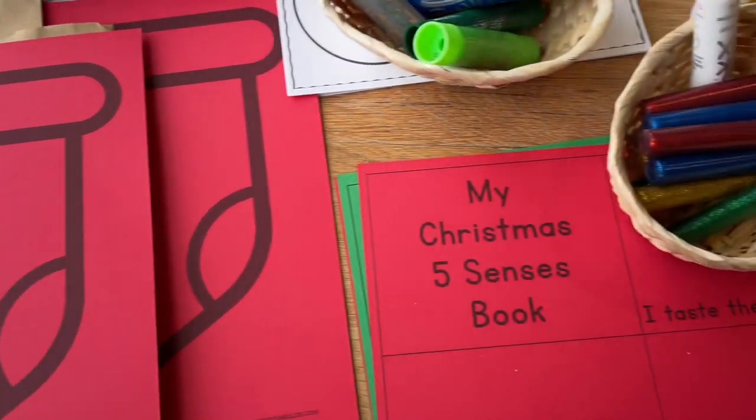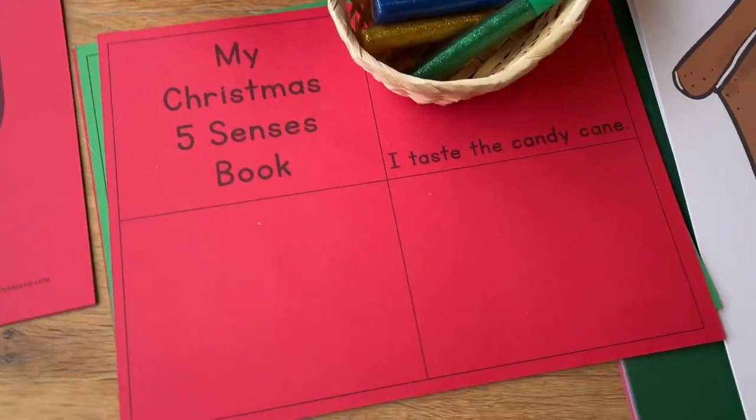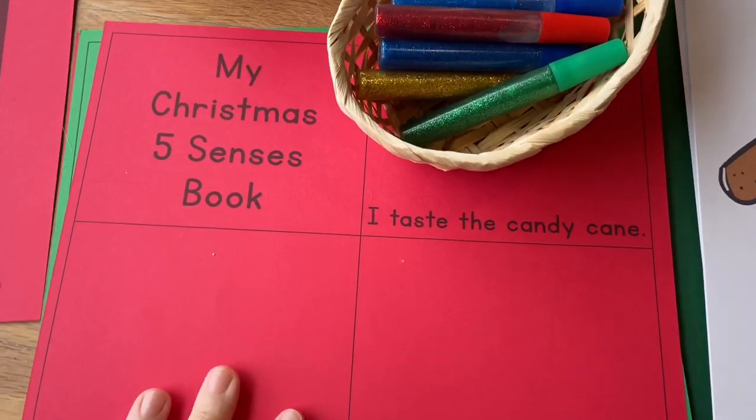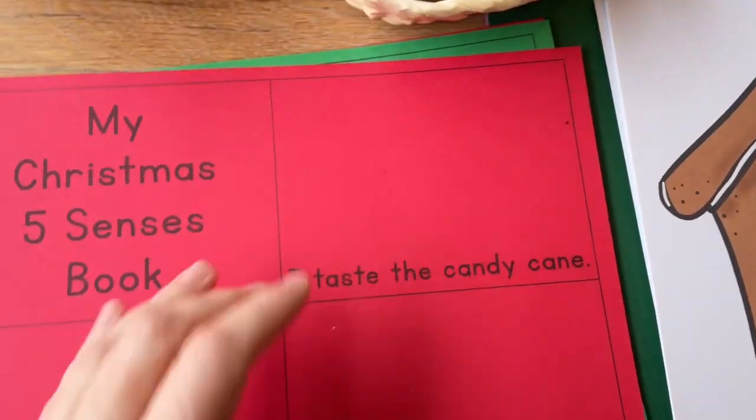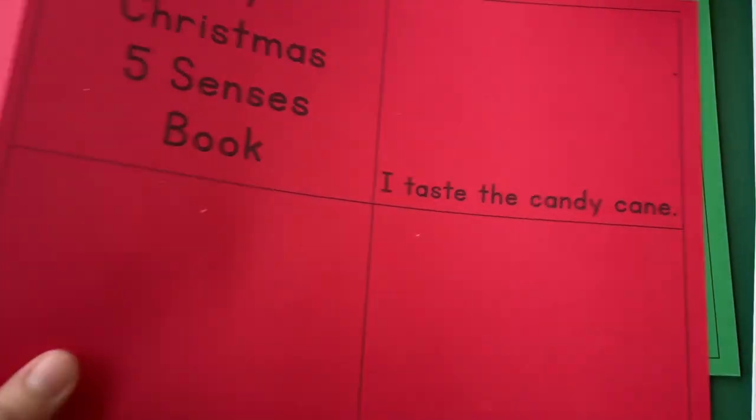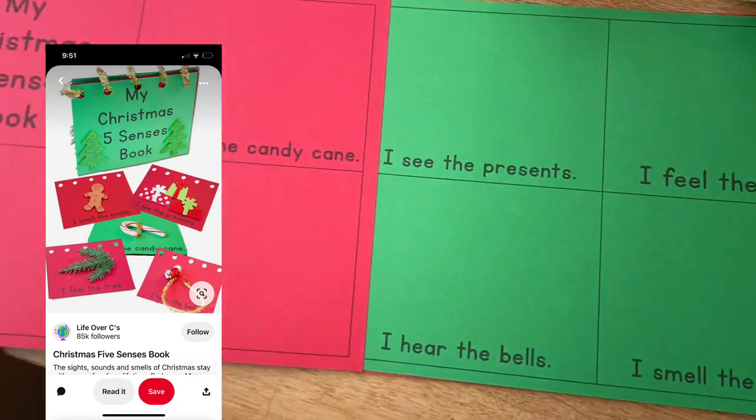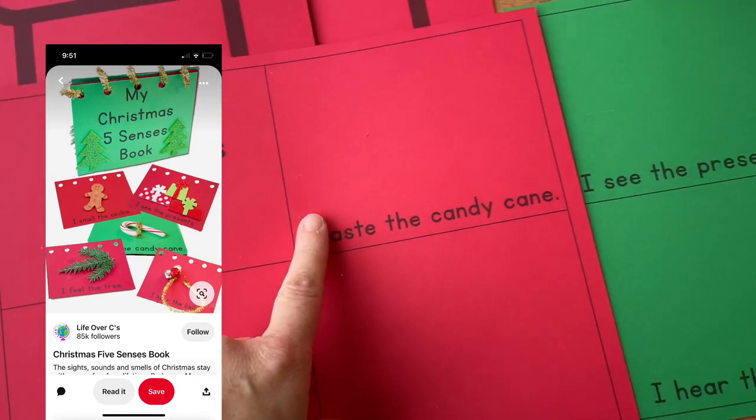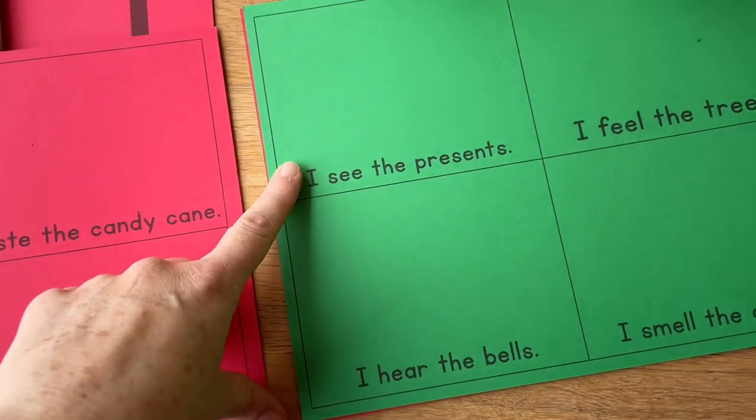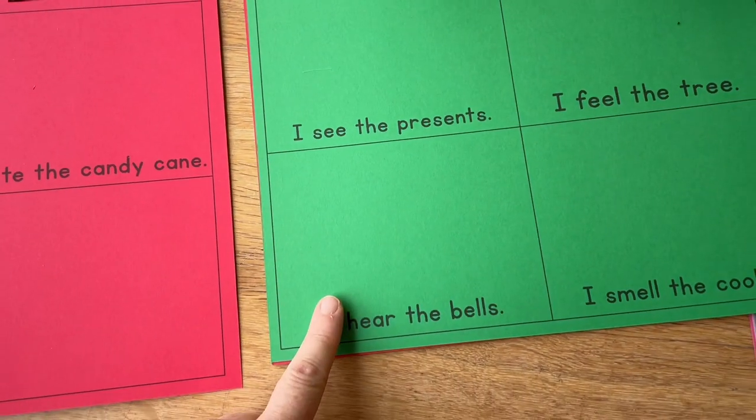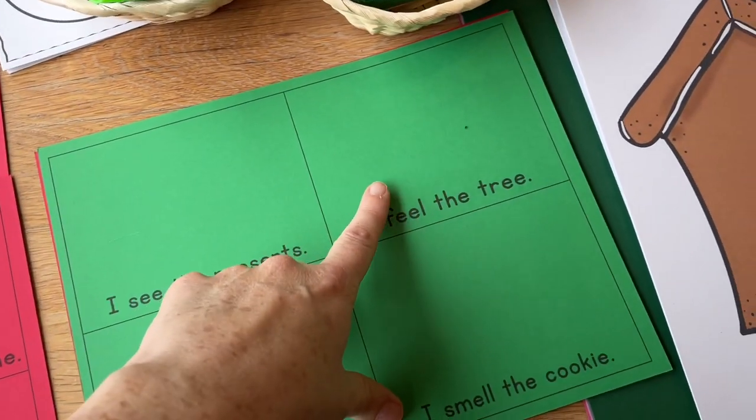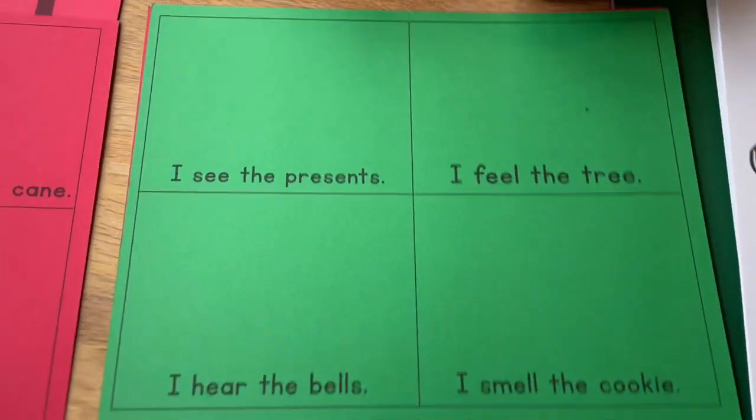So this month I thought it was the perfect chance to be doing the five senses and this is a little senses book that I found. It's a free printable and I'll put the link for that. But each page we can work on this maybe daily or once a week and you put a real life object in there and it'll be a fun little book for them to take home.